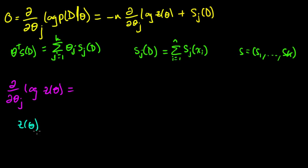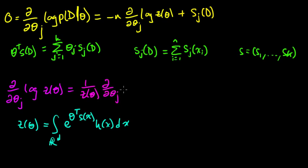So z of theta equals the integral over R^d of e to the theta transpose s of x, h of x dx. Because if we divide by z of theta, then this becomes p sub theta of x, and that has to equal 1. This is integrating with respect to x, with respect to Lebesgue measure. So we have the log of this. The derivative of the log equals 1 over z of theta times the derivative of z of theta with respect to theta j.